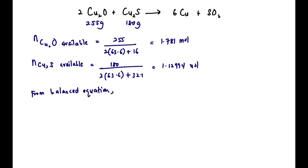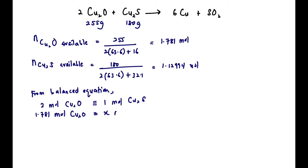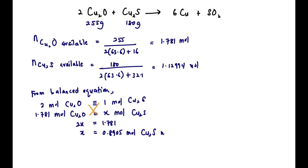From the balanced equation, 2 moles of Cu₂O reacts with 1 mole of Cu₂S. If we have 1.781 mol of Cu₂O, using Cu₂O as reference and cross-multiplying: 2x = 1.781, so x = 0.8905 mol Cu₂S needed.